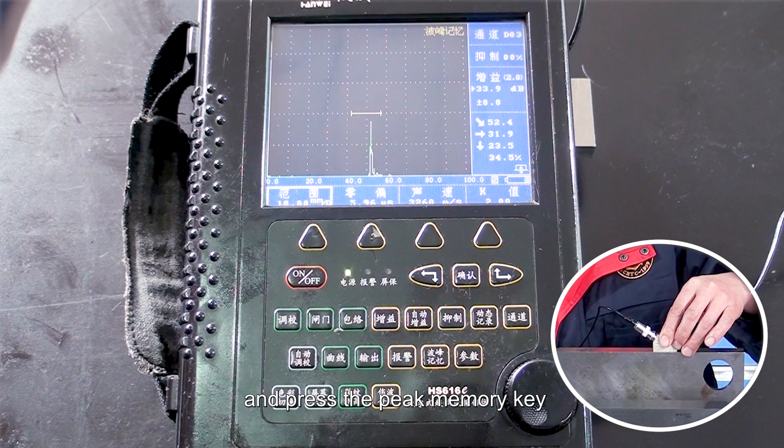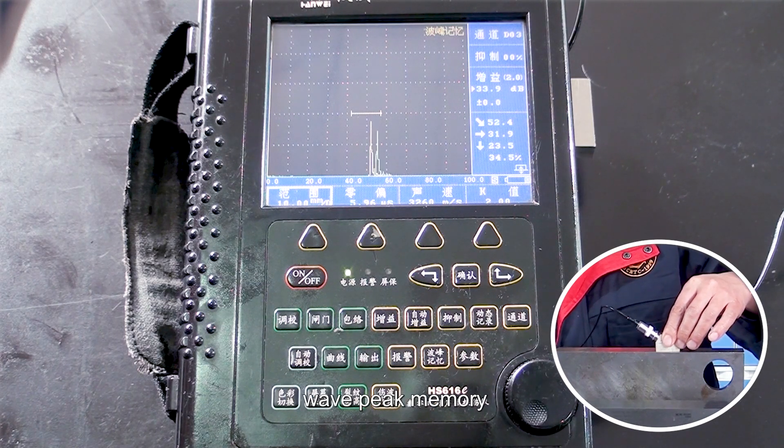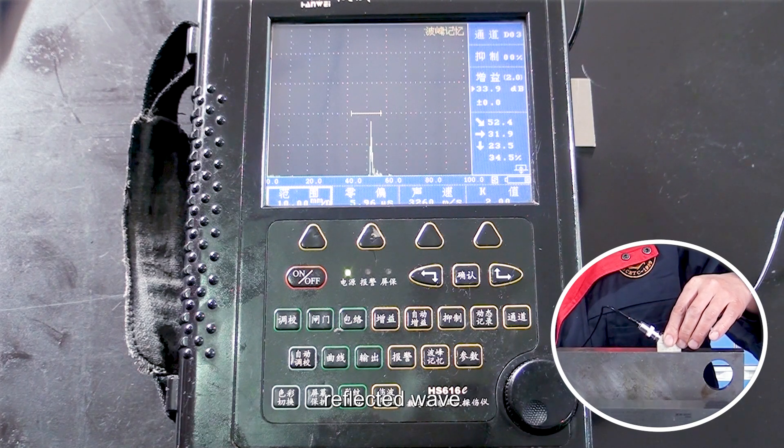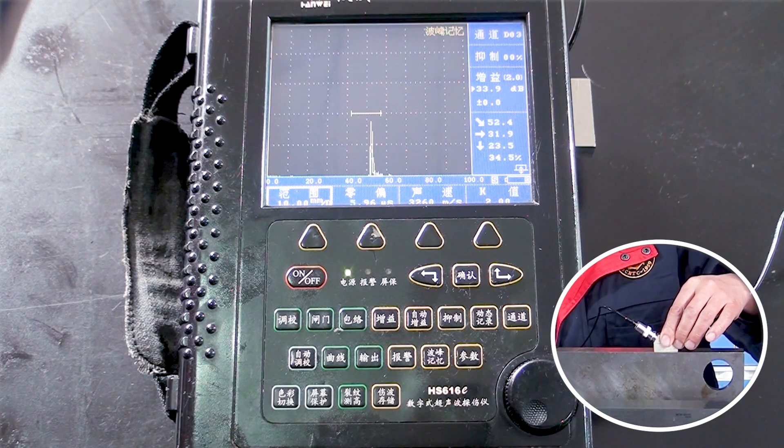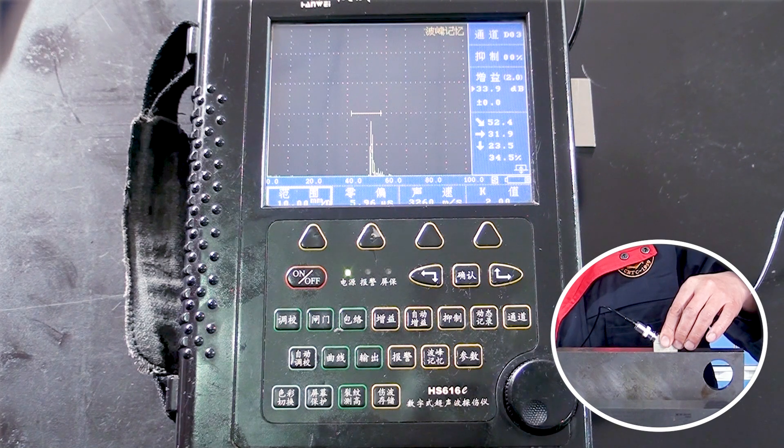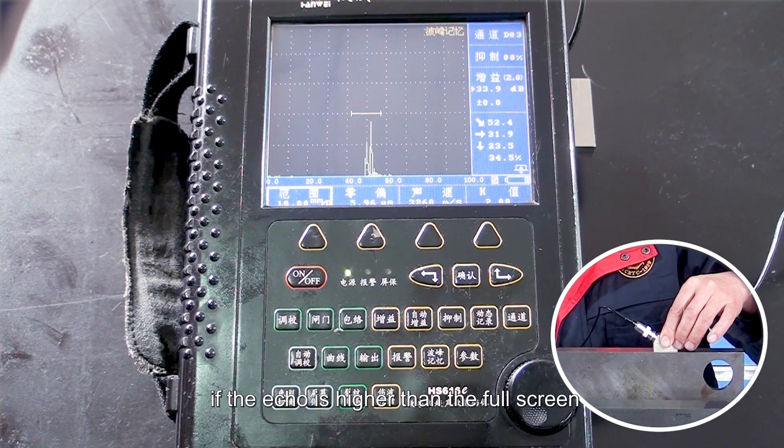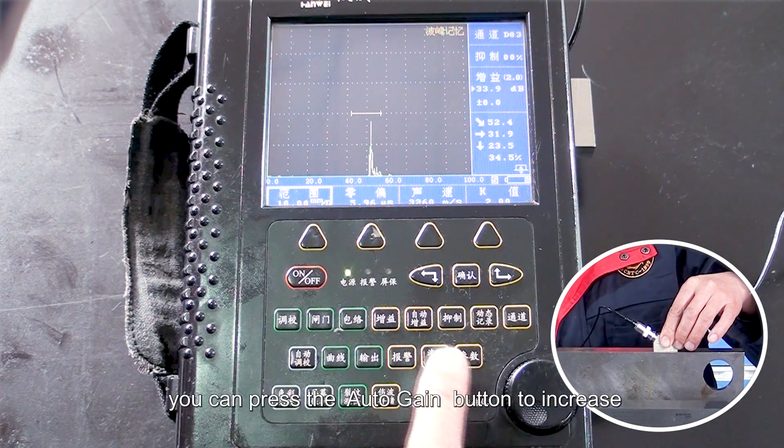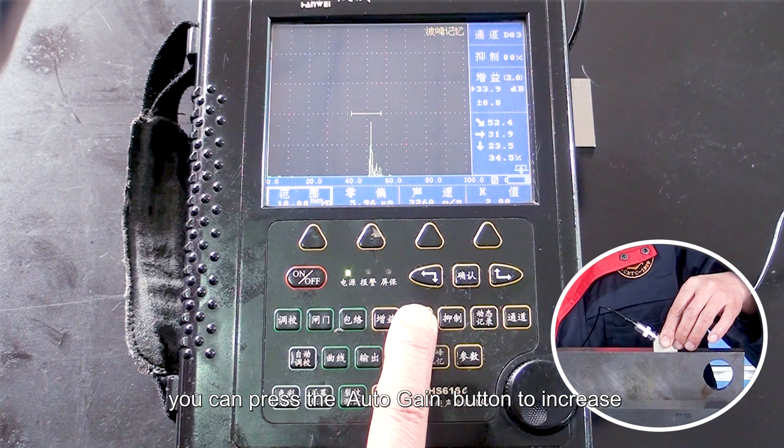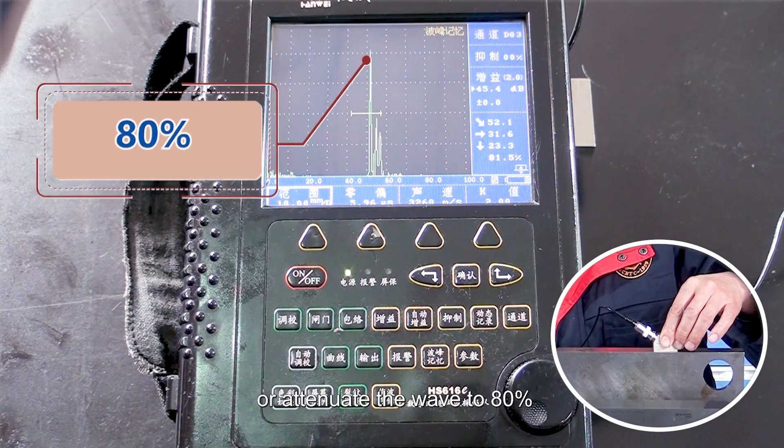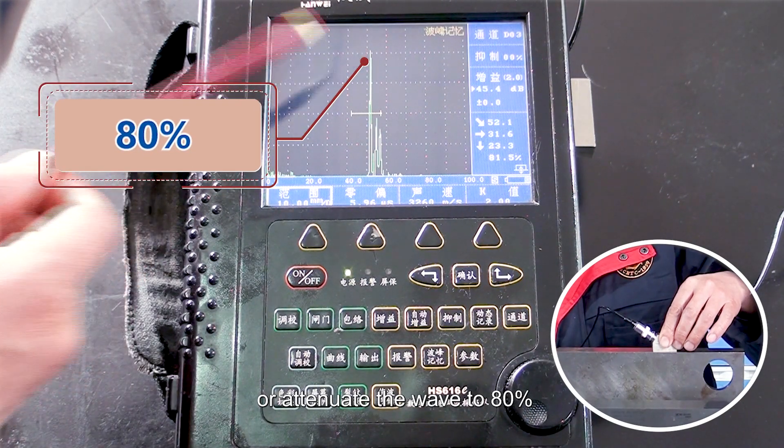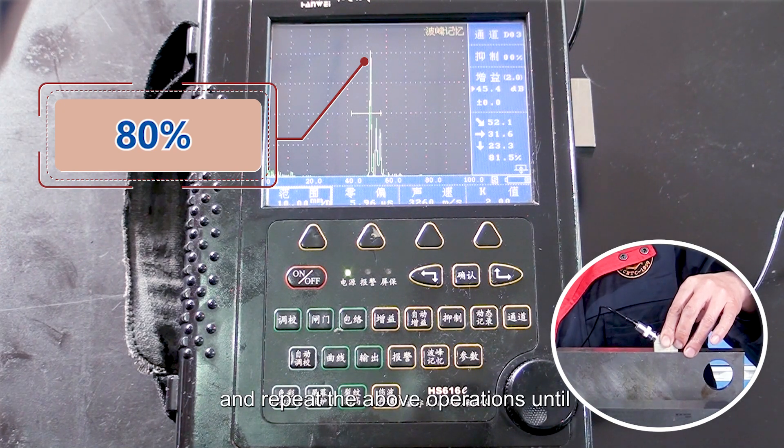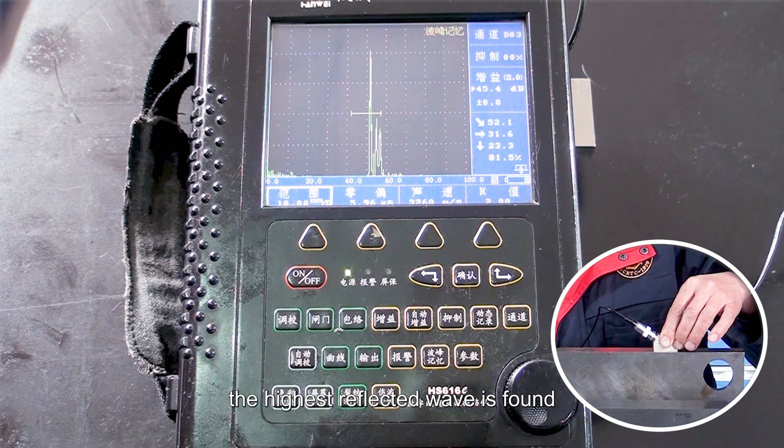Cover the reflected wave of the hole with the gate, and press the peak memory key to move the probe back and forth to find out the highest reflected wave of the hole. At this time, if the echo is higher than the full screen or lower than 20 percent, you can press the auto-gain button to increase or attenuate the wave to 80 percent, and repeat the above operations until the highest reflected wave is formed.